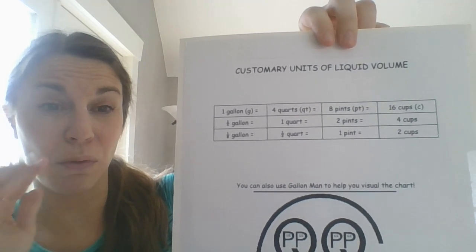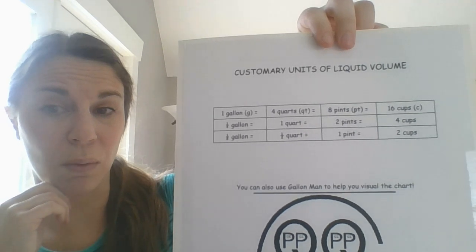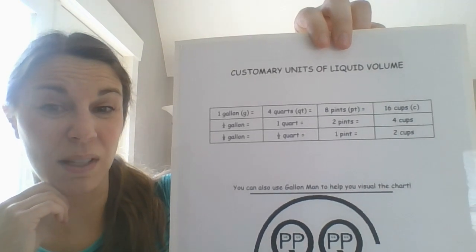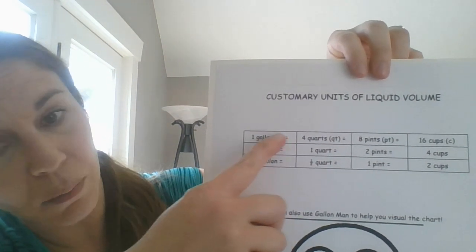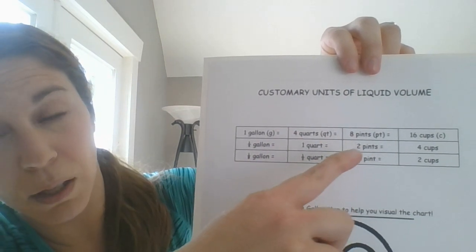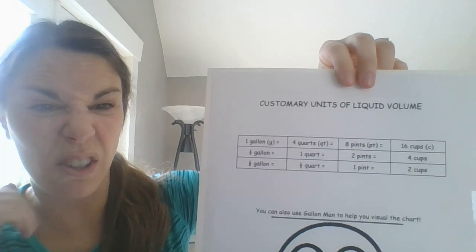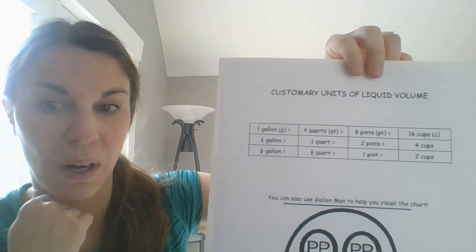One gallon is equal to four quarts, which is equal to eight pints and then is equal to 16 cups. So as you can see, we're going from the largest and then we are going down to our smallest unit being cups. So again, there are four main units that we're going to focus on.